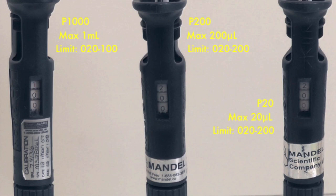You should never go over the limit as this will damage the pipetment. The range of a P1000 is between 200 microliters to 1000 microliters, represented by 020 to 100 on the dial.